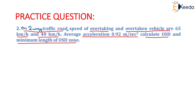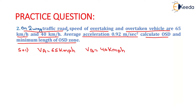We need to calculate the overtaking sight distance as well as the minimum length of the overtaking sight distance zone. We know that VA will be equal to 65 km per hour and VB will be equal to 40 km per hour. Acceleration a will be equal to 0.92 m per second square, and reaction time TR will be equal to 2 seconds as per the Indian Road Congress.